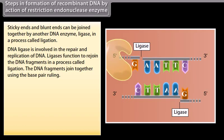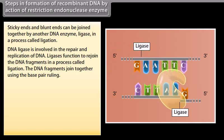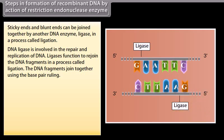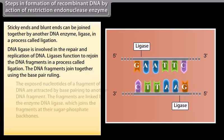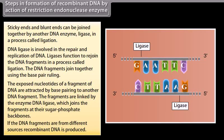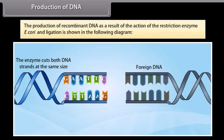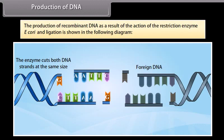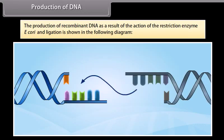DNA ligase is involved in the repair and replication of DNA. Ligases function to rejoin the DNA fragments in a process called ligation. The DNA fragments join together using the base pairing rule. The exposed nucleotides of a fragment of DNA are attracted by base pairing of another DNA fragment. The fragments are linked by the enzyme DNA ligase, which joins the fragments at their sugar-phosphate backbones. If the DNA fragments are from different sources, recombinant DNA is produced. Both DNA fragments can be joined at the sticky ends, resulting in a recombinant DNA.